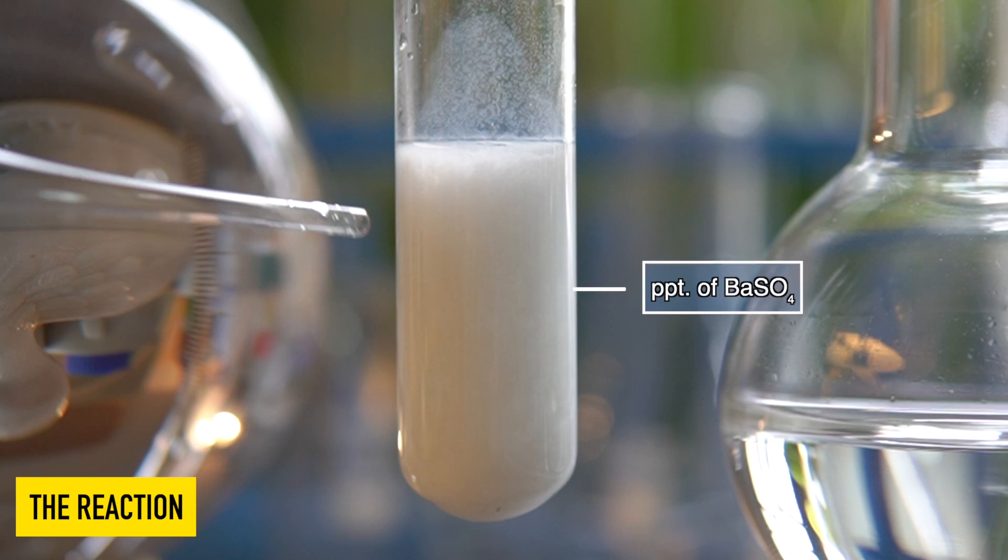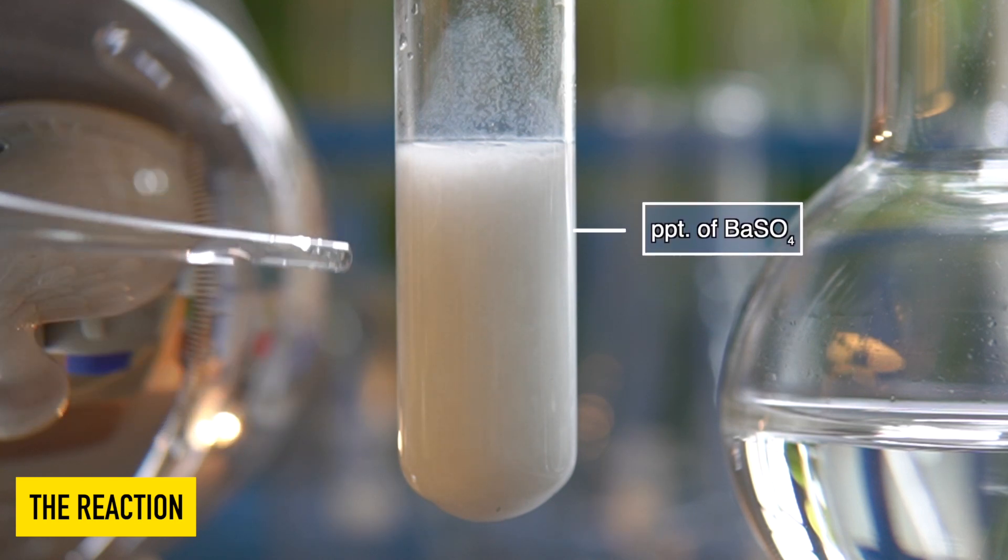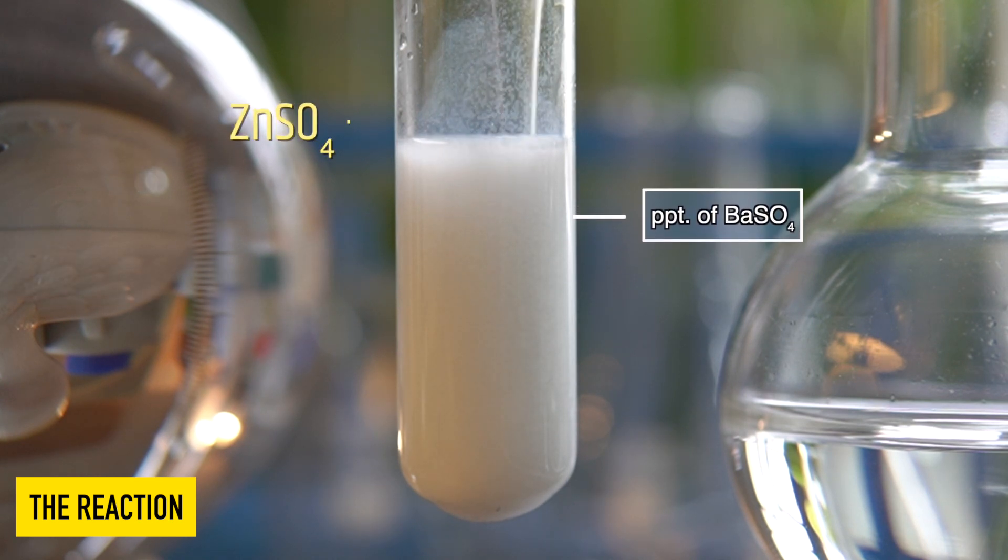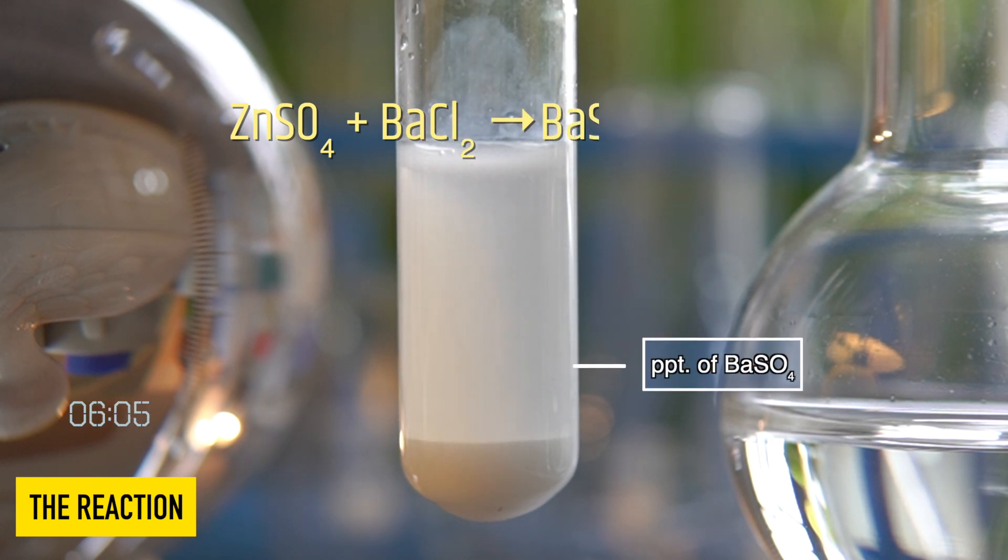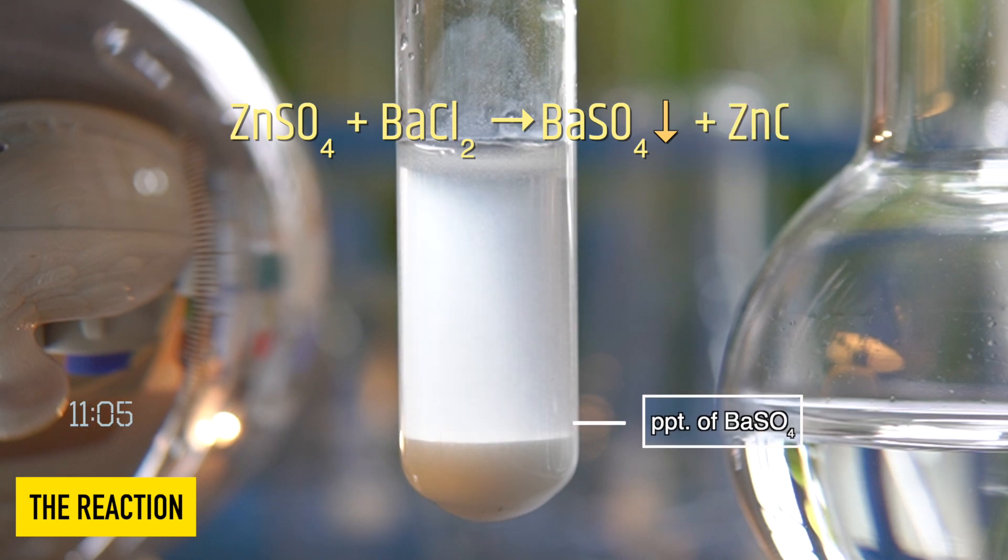The white insoluble precipitate that has been formed inside the test tube is nothing but barium sulfate. So, in this reaction, when zinc sulfate reacts with barium chloride, it will produce a white insoluble precipitate of barium sulfate along with zinc chloride.